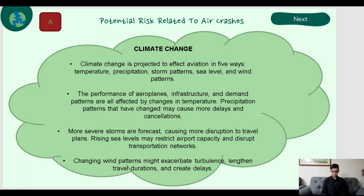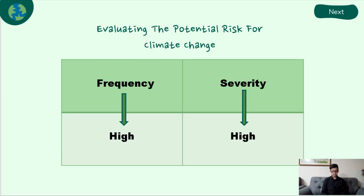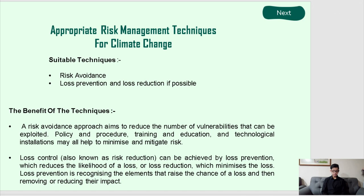Changes in temperature and precipitation patterns may cause more delays and cancellations. More severe storms are forecast, causing more disruption to travel plans. Rising sea levels may restrict airport capacity and disrupt transportation networks. Changing wind patterns might also increase turbulence, affect travel duration, and create delays. For evaluating the potential risk of climate change, frequency is high and severity is also high.